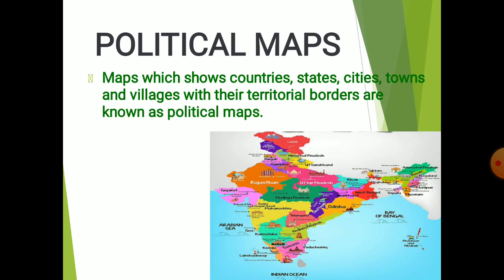Then comes political maps. Maps which show countries, states, cities, towns and villages with their territorial borders are known as political maps. Here, one picture is given in which you can see that in our country there are different states, cities and towns. This map is a political map showing the states, cities and towns — the political boundaries of a country.